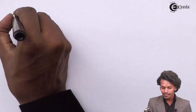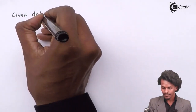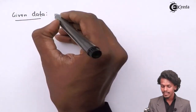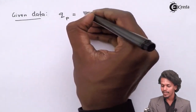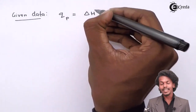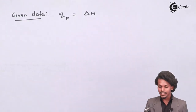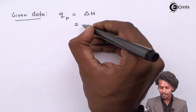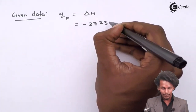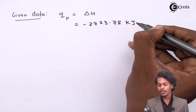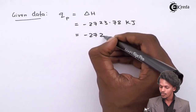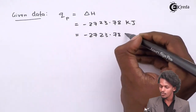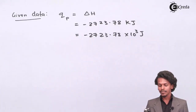Looking at the given data: the heat of combustion at constant pressure is nothing but delta H — the enthalpy — which is given as minus 2723.78 kJ, or equivalently minus 2723.78 × 10³ Joules. The temperature T is also provided.